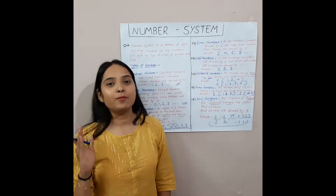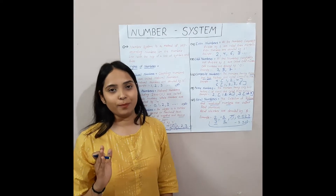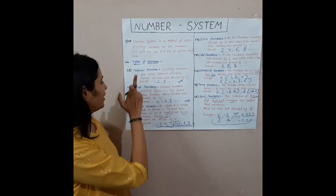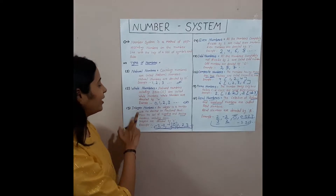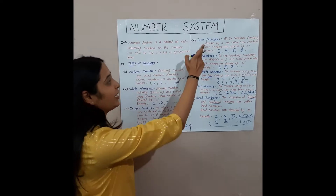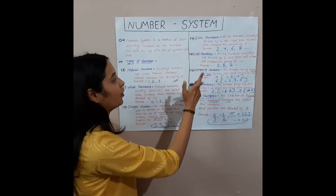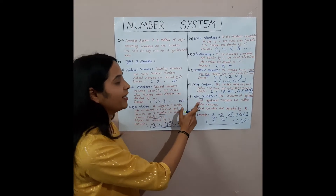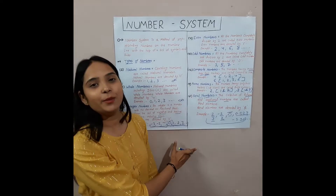There are many types of numbers like natural number, whole, integer, even, odd, composite, prime, real, and many more.